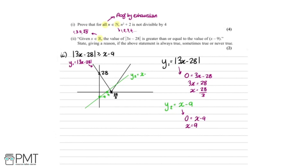A quick check: y₁ has gradient 3 and y₂ has gradient 1, so y₁ should be steeper — and that's consistent with the sketch. Now looking back at the statement: |3x − 28| ≥ |x − 9|. From the graph, between the two intersection points, the value of x − 9 is actually greater than |3x − 28|. Outside of those intersection points, |3x − 28| is greater than x − 9.